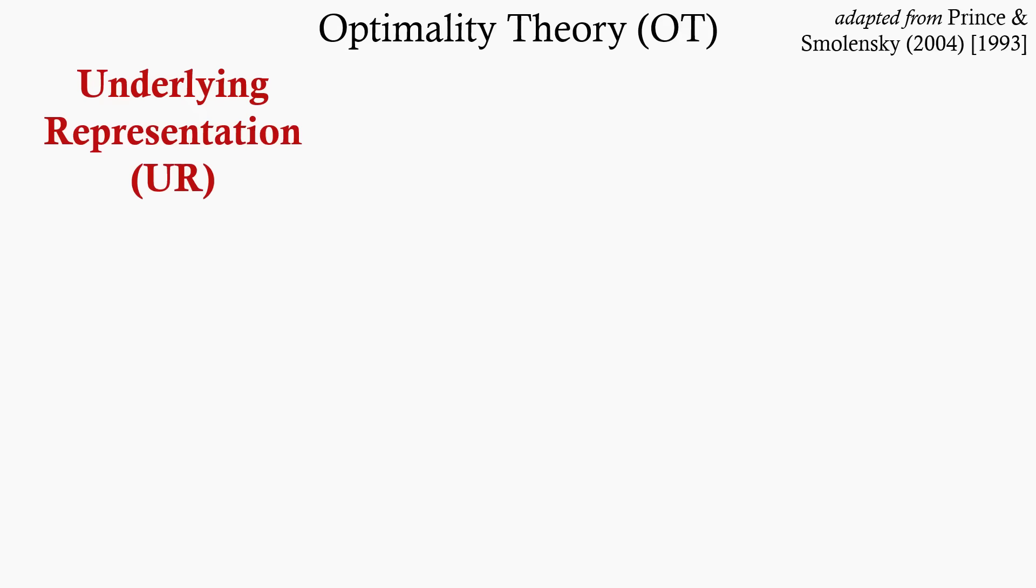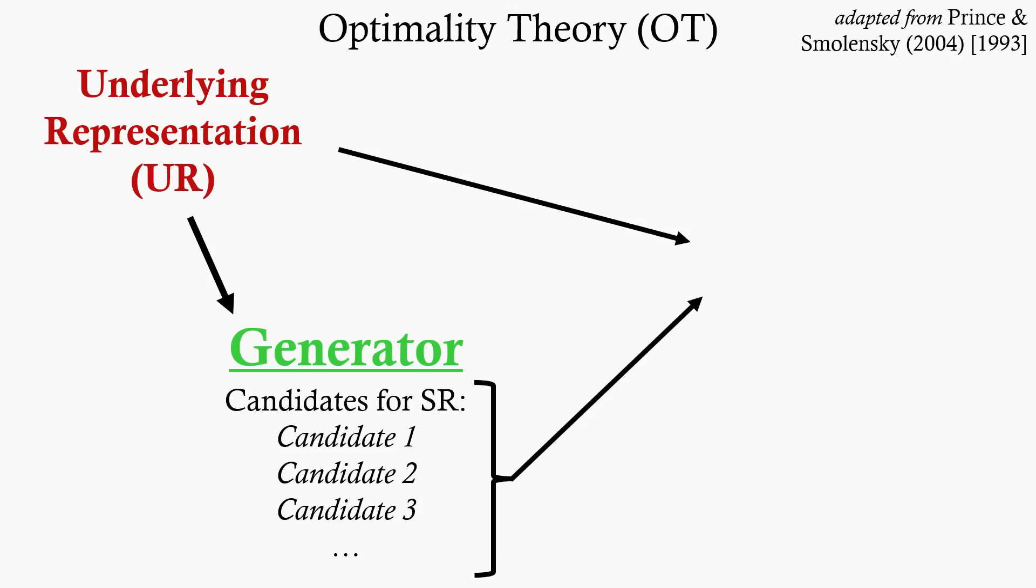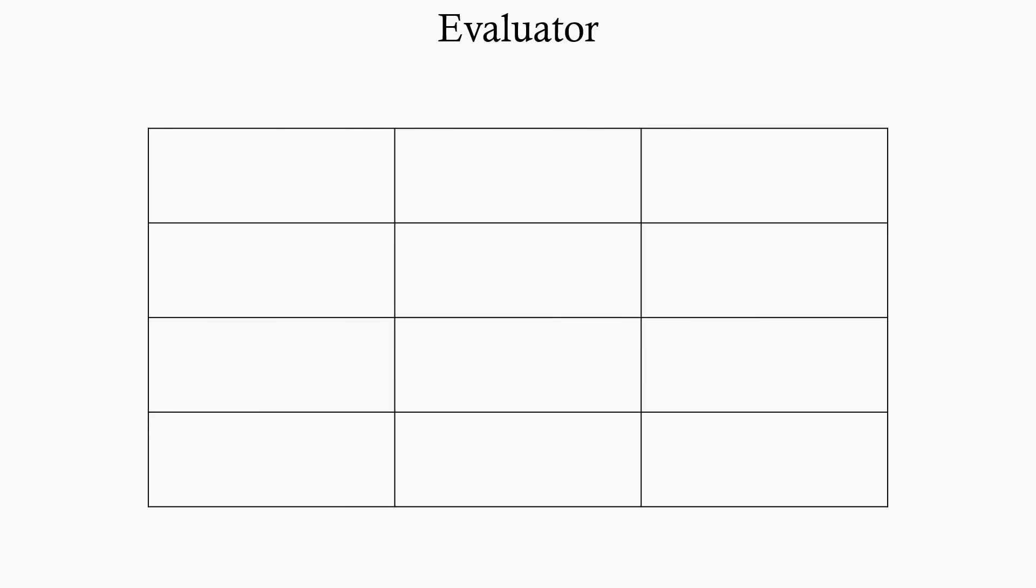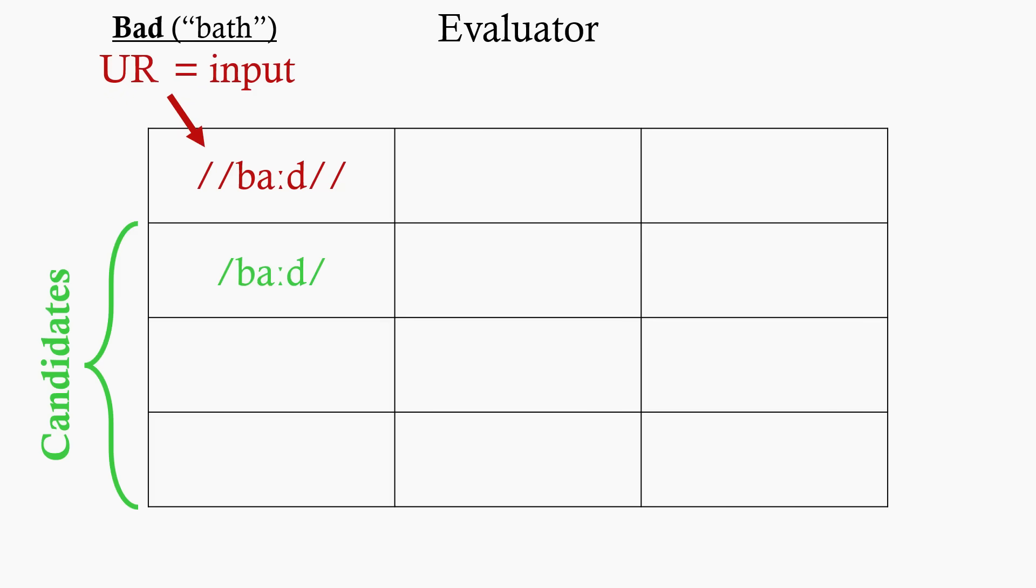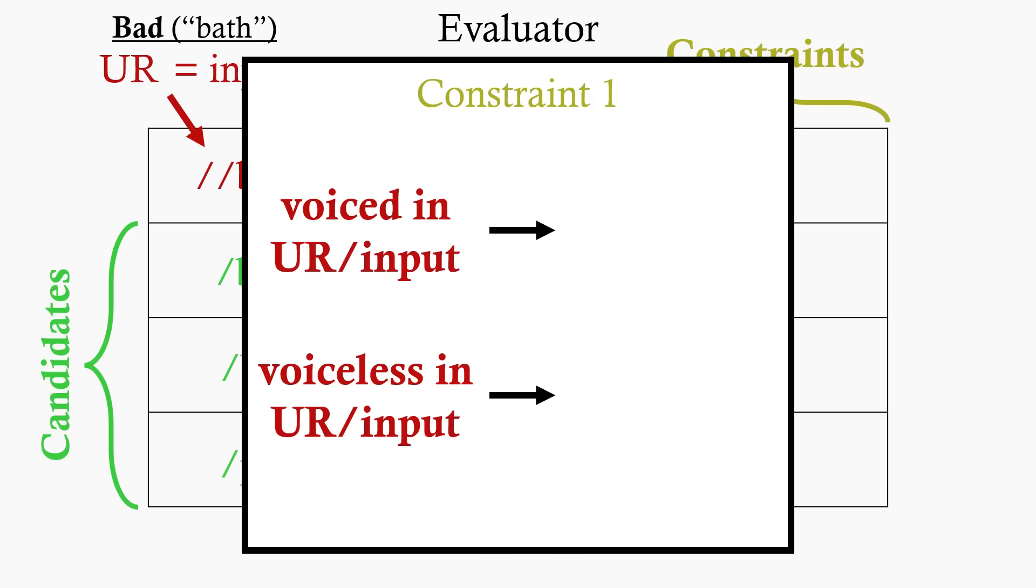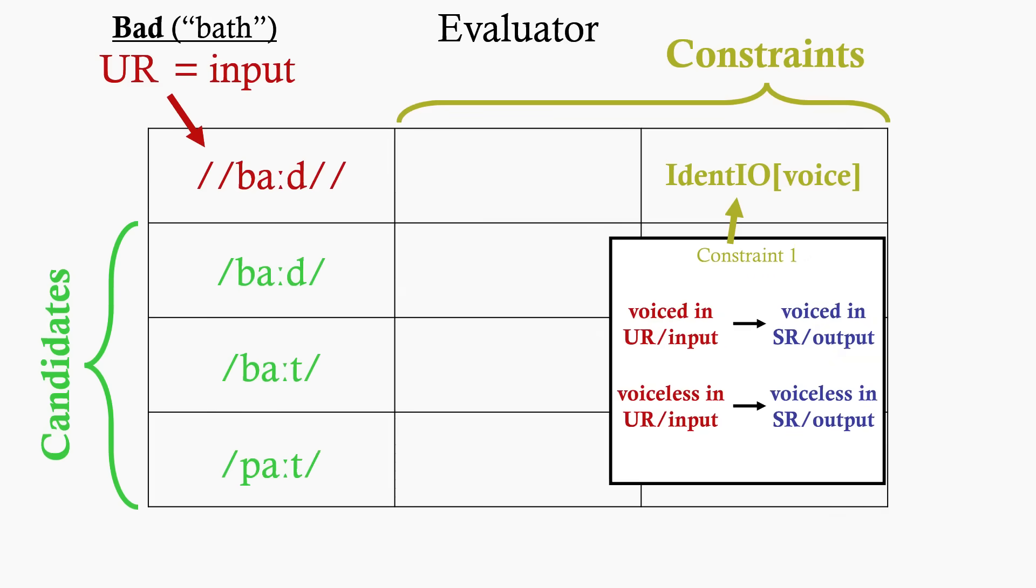OT has a different model of how URs become their SRs. Not rules-based, but constraints-based. So in OT, we have the UR, and then we have a generator, which creates a massive bunch of candidates, which are then fed into the evaluator. The evaluator determines which candidate is the most appropriate to be chosen as a surface representation, based on a series of constraints. We can model this evaluator as a table. So say we have the UR, BAD, we can call this the input. And one candidate that is identical to the input, one that is BAT, and one that is PAT. And for the sake of simplicity, we'll say we have two constraints.